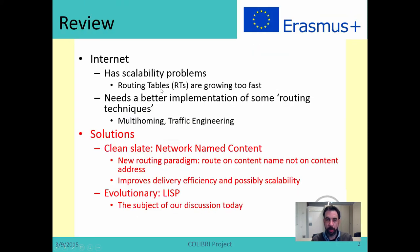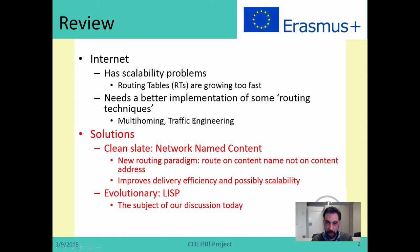As we recall from the previous lesson, we are having scarcity issues on the internet with routing tables. The main reason behind this is not that the internet is becoming very large, but that we have many issues with multi-homing and traffic engineering practices that are adding a lot of entries into routing tables. What we need is a better implementation of multi-homing and traffic engineering, and this is what LISP is trying to solve.